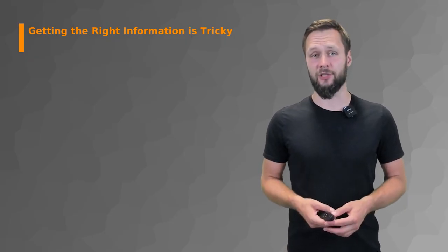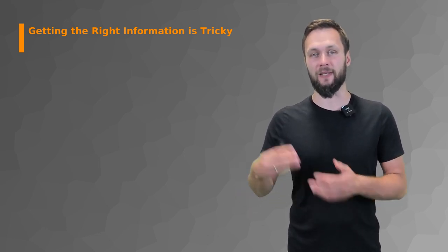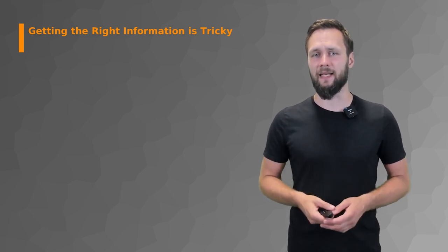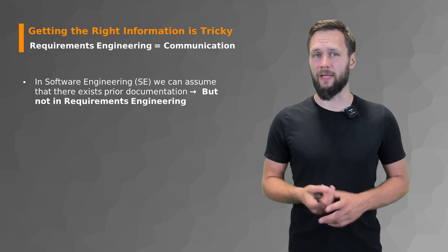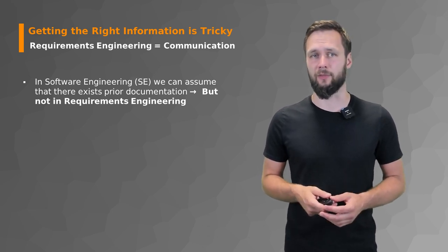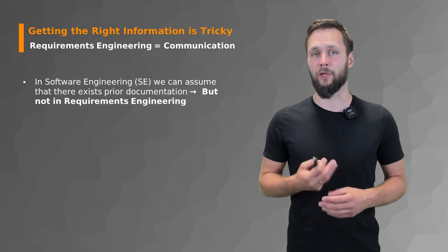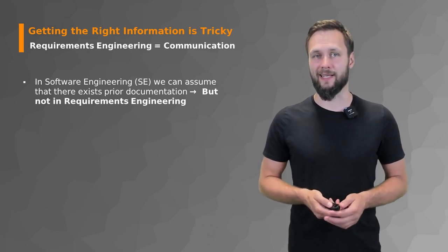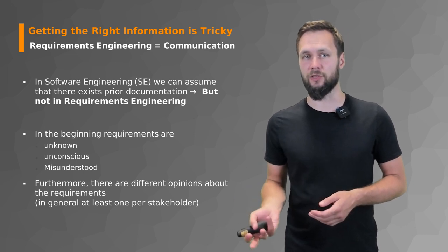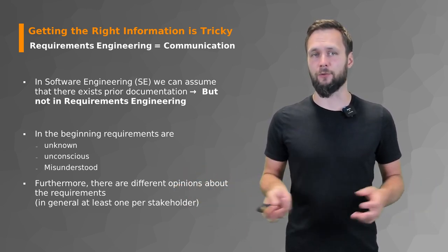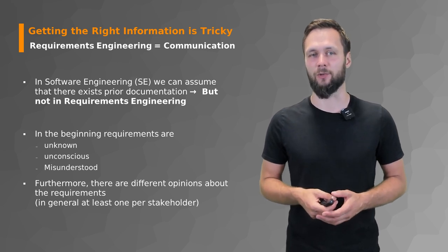A major part of requirements engineering is communication, with the goal to extract and properly define the requirements you need for your project and then successfully implement those requirements. But getting them is a difficult and time-consuming process that can be tricky at best. Usually when you look at software engineering you can assume there is some prior documentation, but requirement engineers are often in a position where this is not the case — building something new or where only limited documentation exists. In the beginning, requirements are usually unknown. Some might be known but unconscious, and they are also often misunderstood. Furthermore, there are different opinions about requirements — at least one per stakeholder, and sometimes even within a single stakeholder you can have multiple contradicting requirements for the same specific problem.